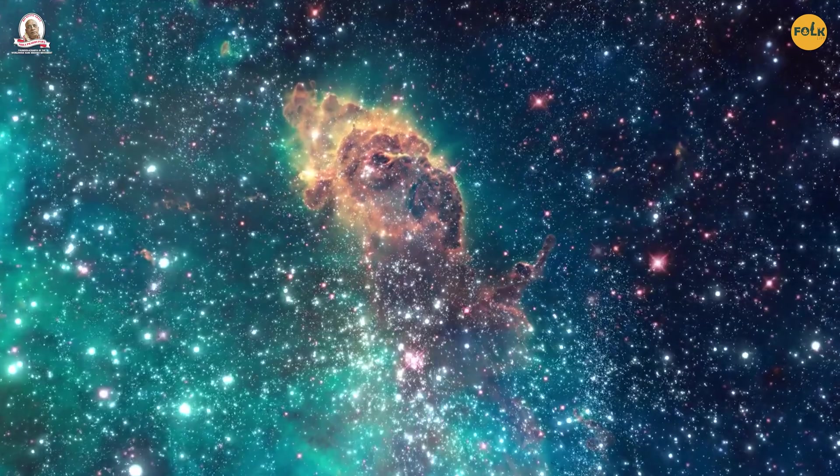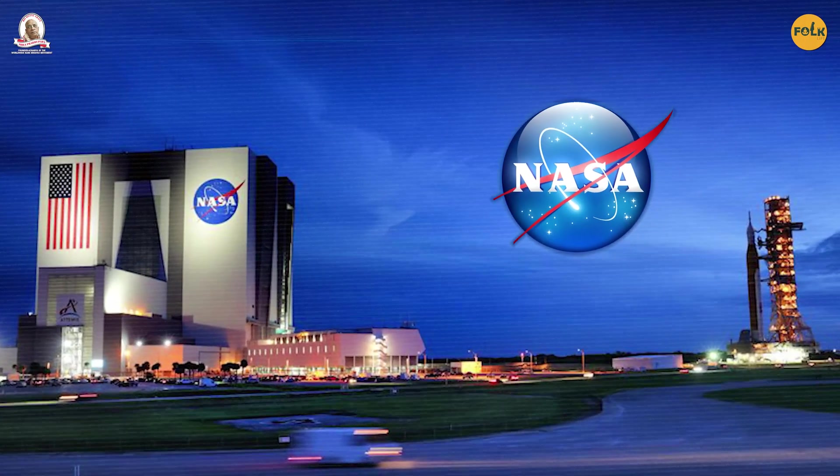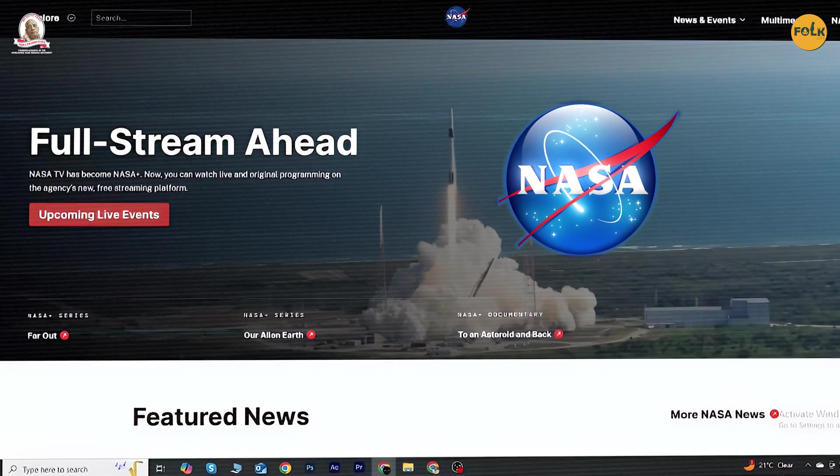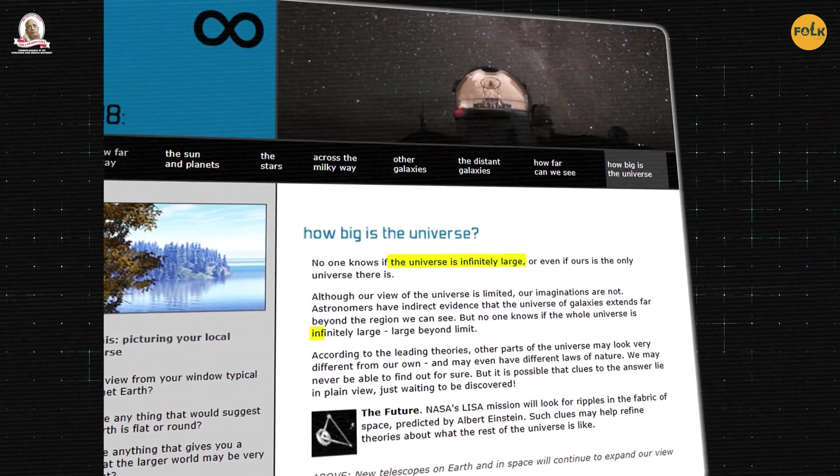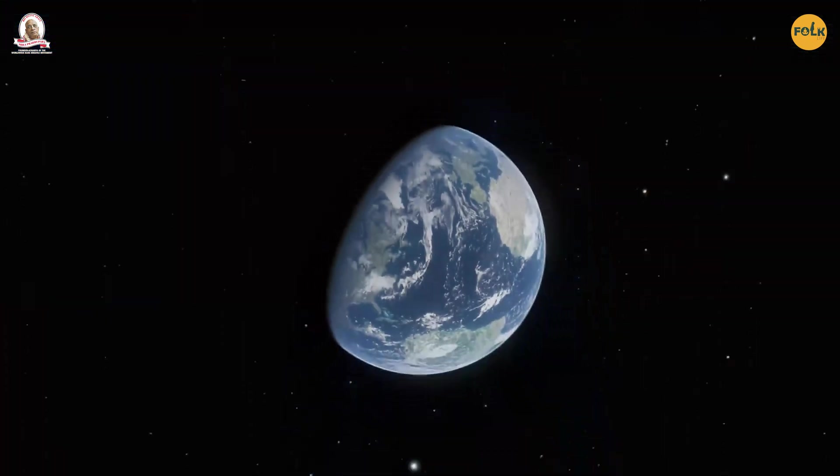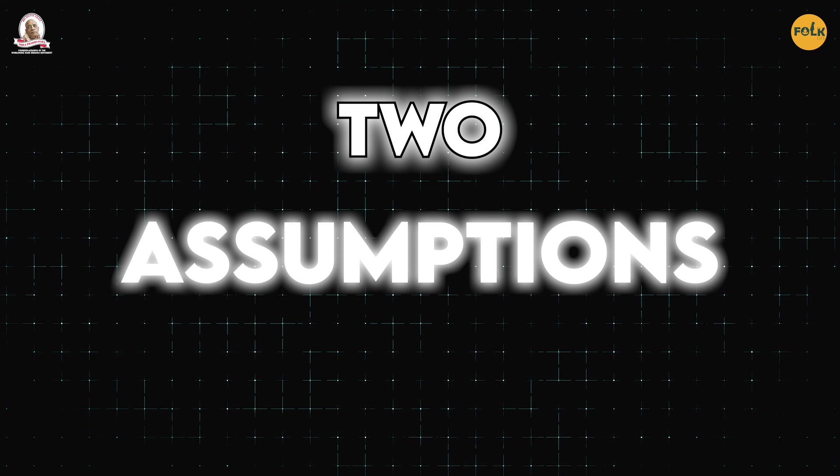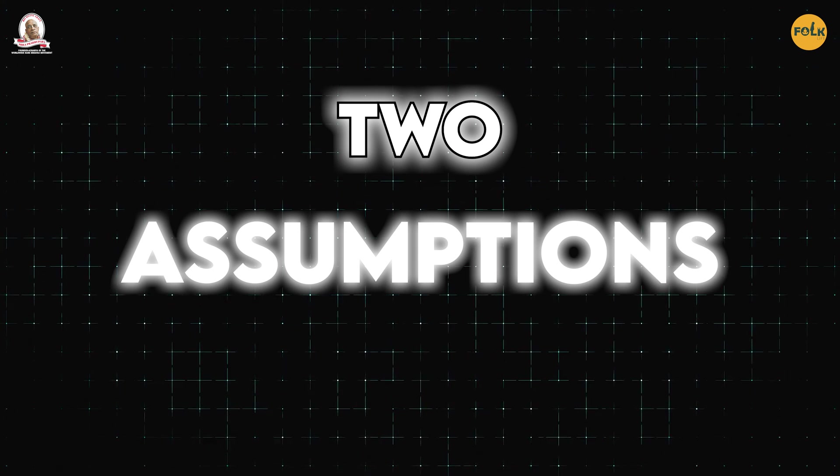Wait, if the universe's size has been measured in such a straightforward and accurate way, then why is it still written on NASA's official website that the size of the universe is infinite? And to conclude, we can only say that the universe is much bigger than it appears to us? That is because there are two big assumptions in the calculation mentioned above.